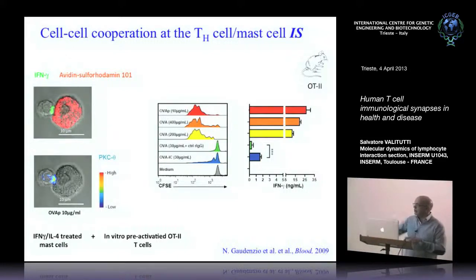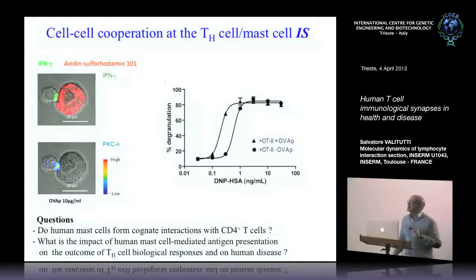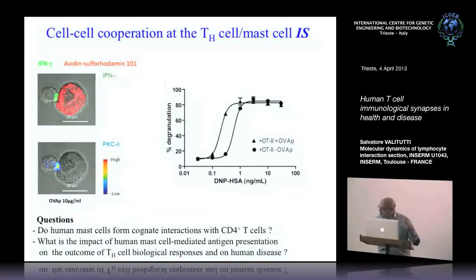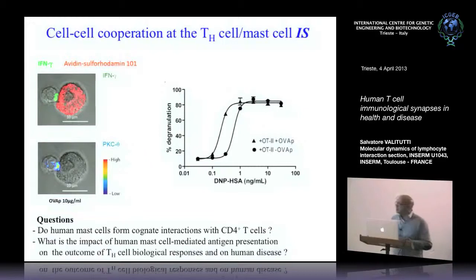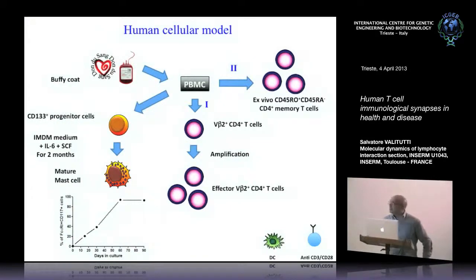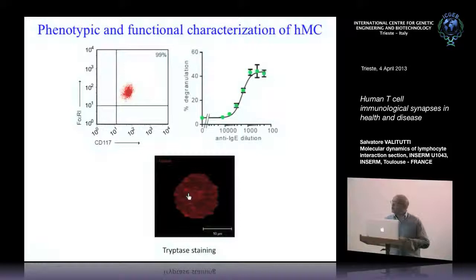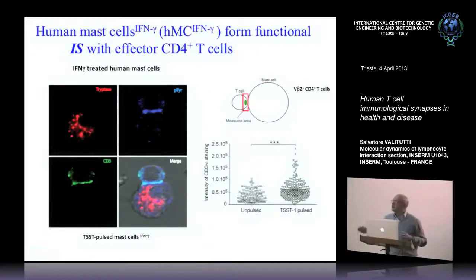More recently we asked whether human mast cells might serve as antigen-presenting cells for class II-restricted T-lymphocytes, and if so, what the impact of this antigen presentation by mast cells would be on helper T-cell biology. Nicola and Eric developed a method to generate untransformed mast cell lines from human blood. These cells were characterized for their mast cell biological, functional, and phenotypical properties, and used to form immunological synapses with human T-lymphocytes.